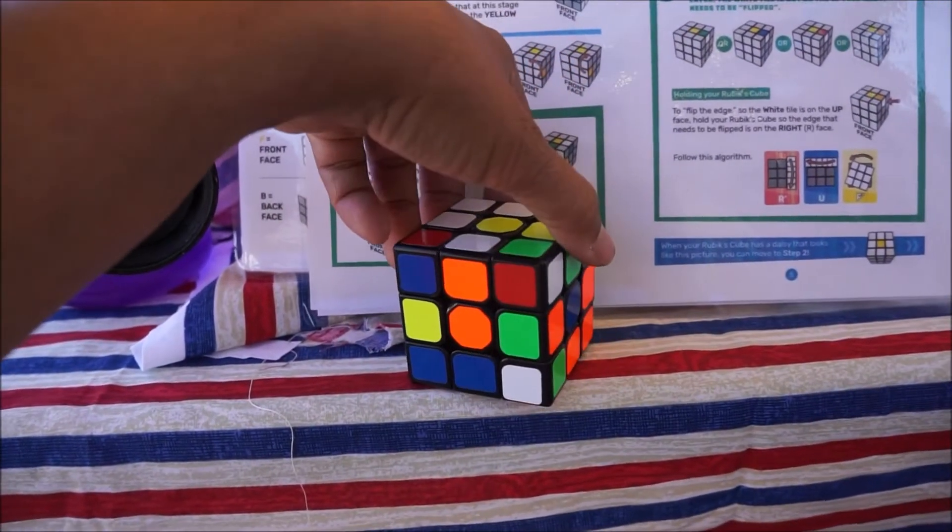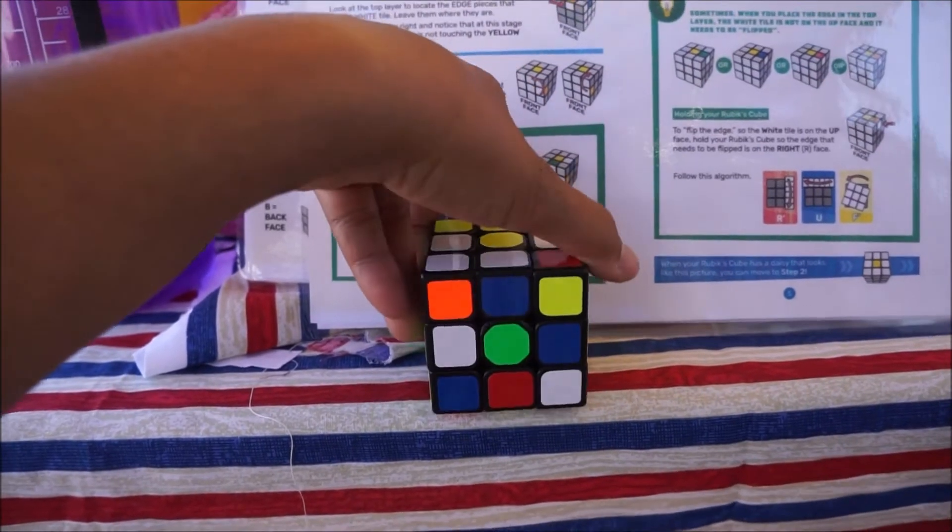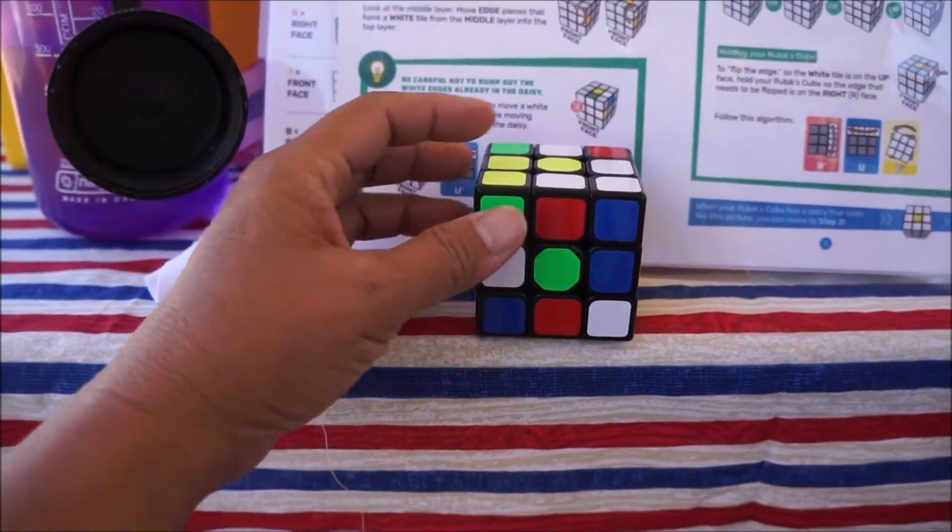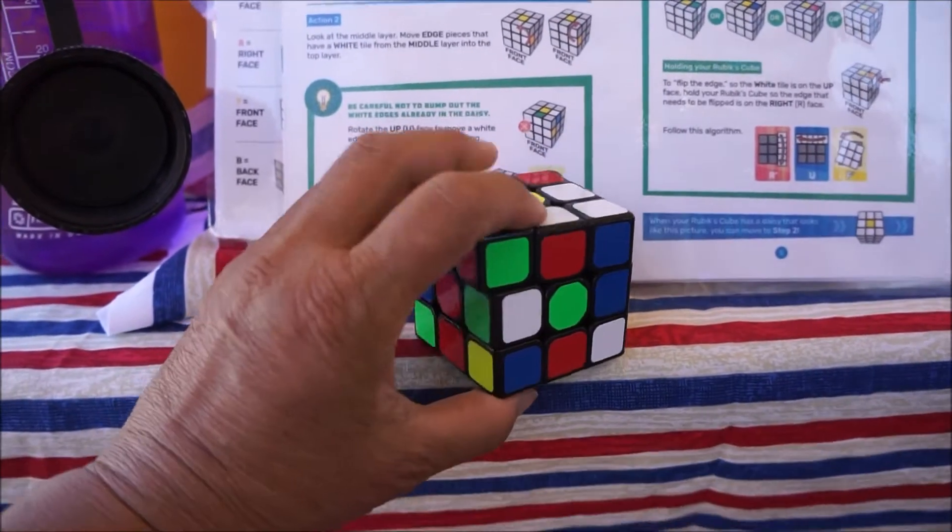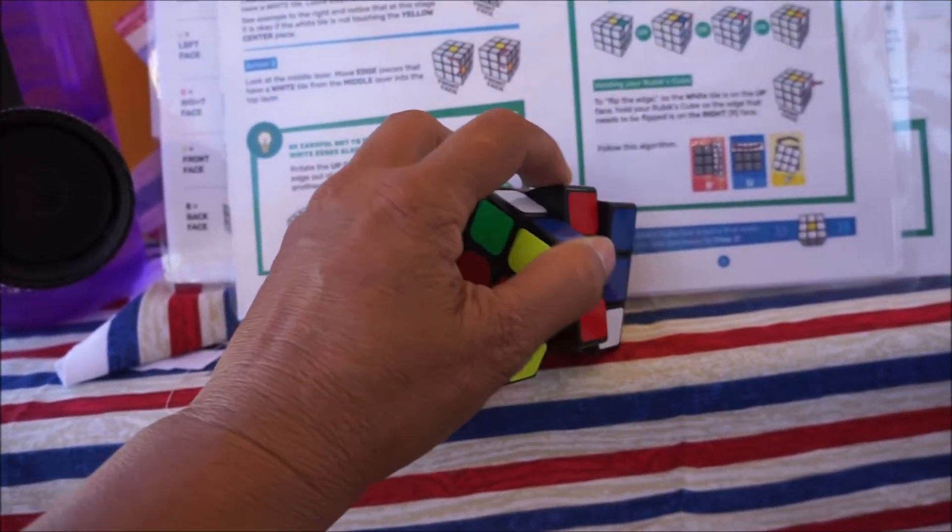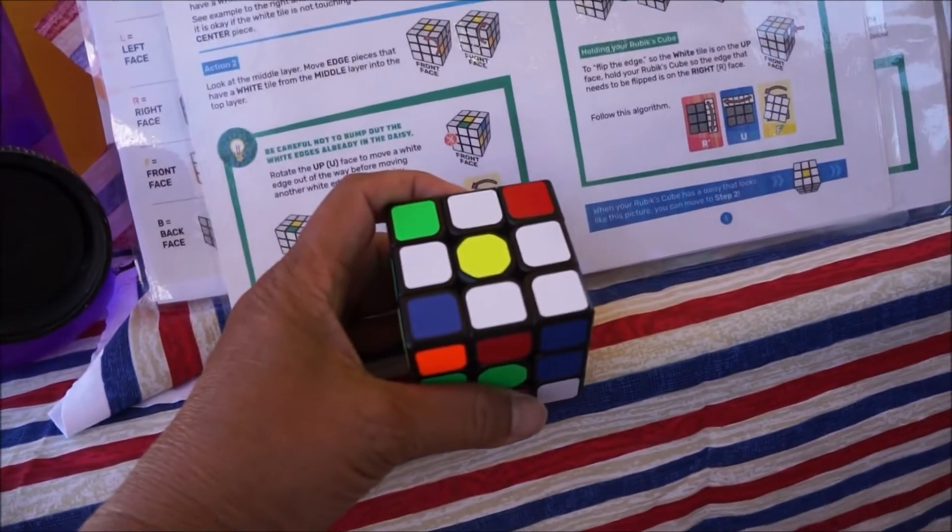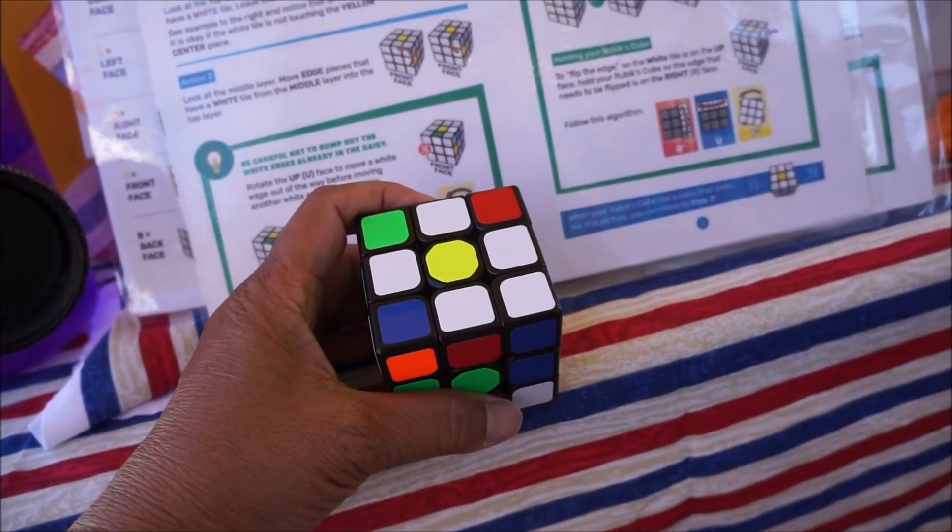And then now, get this guy. So this guy needs to be over here. And it is in the right spot. So look, we have a daisy. That wasn't so bad. So awesome.